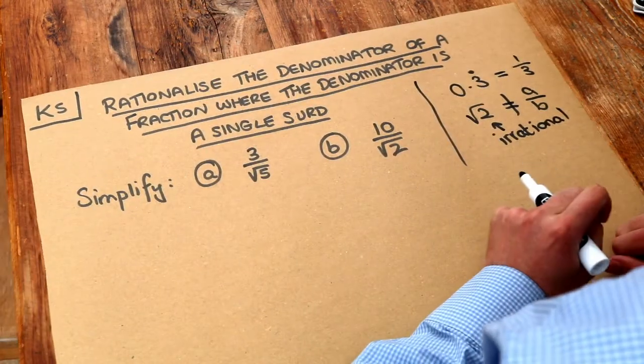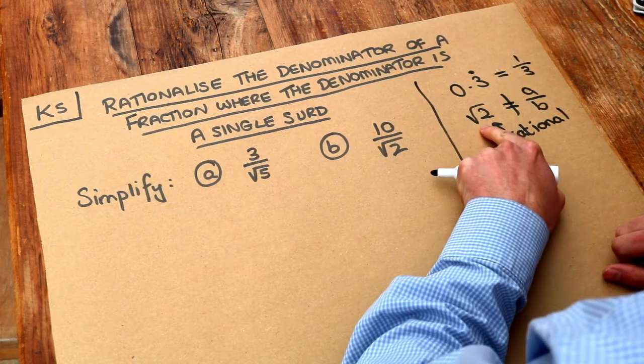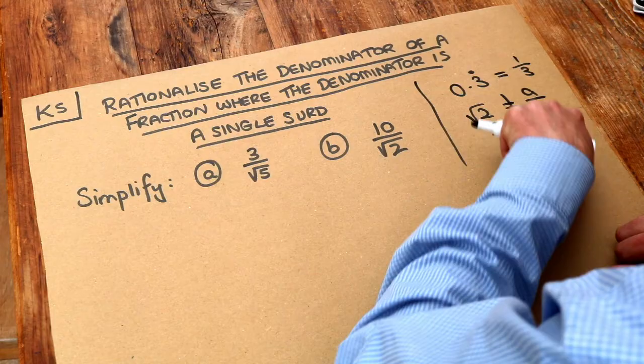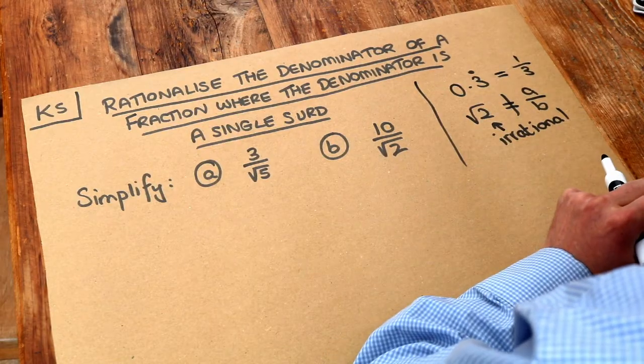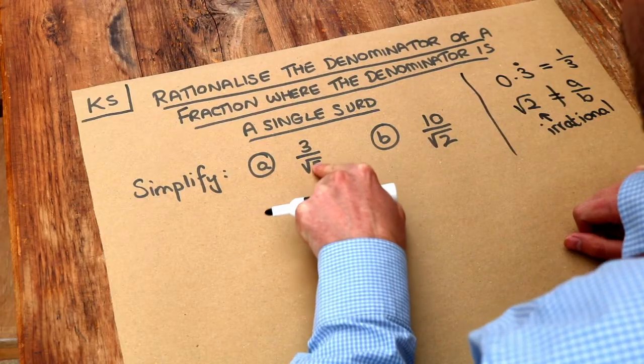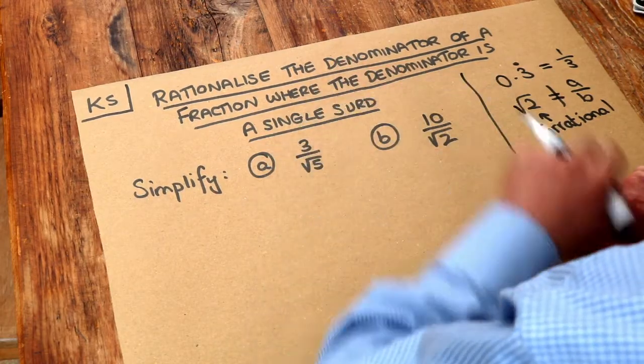Now to rationalize something means to turn it from an irrational number to a rational number, so to turn it into something that could be expressed as a whole number or a fraction. So it basically means, in layman's terms, to get rid of the square roots in the denominator if you want to rationalize the denominator.